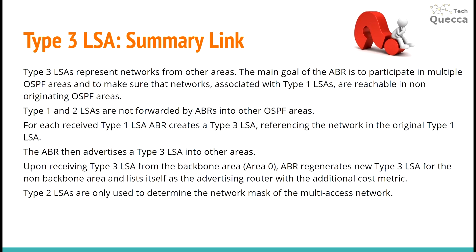The ABR then advertises a Type 3 LSA into other areas. Upon receiving a Type 3 LSA from the backbone area (area 0), the ABR generates a new Type 3 LSA for the non-backbone area and lists itself as the advertising router with the additional cost metric. Type 2 LSAs are only used to determine the network mask of the multi-access network.